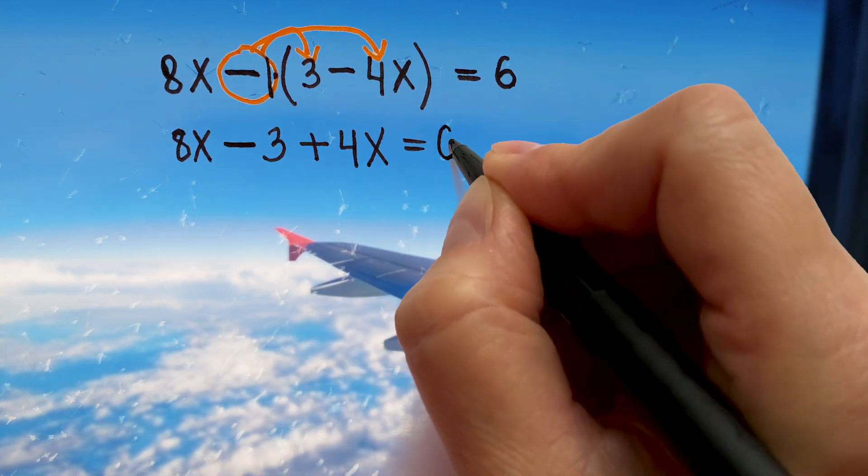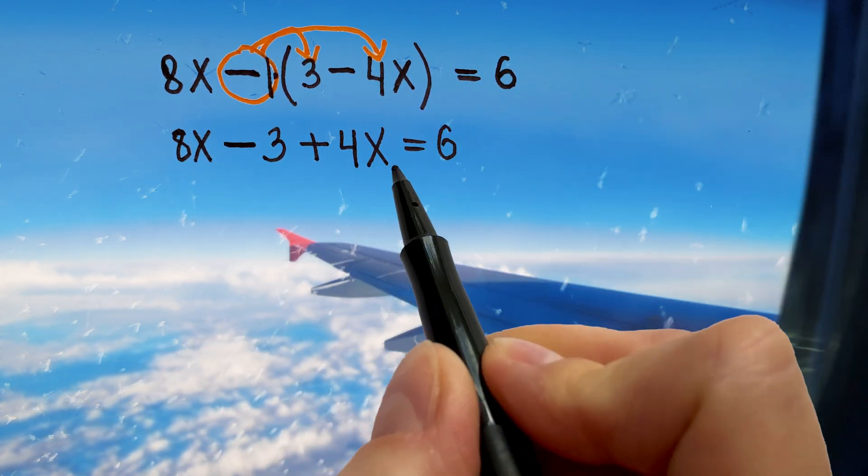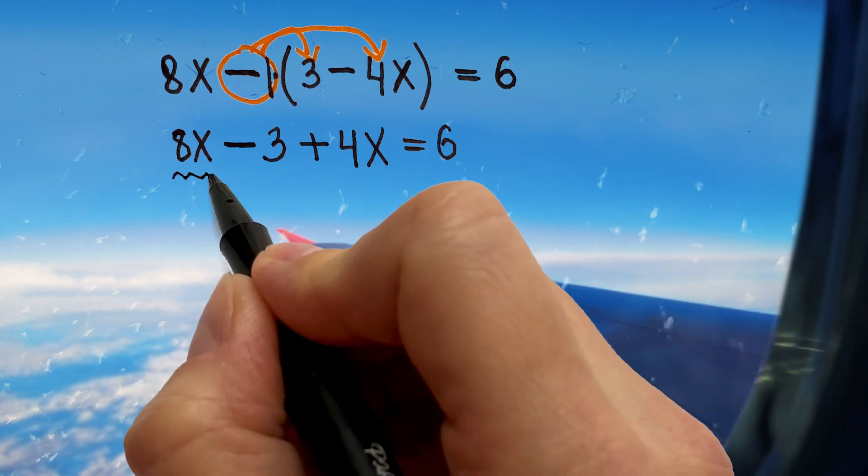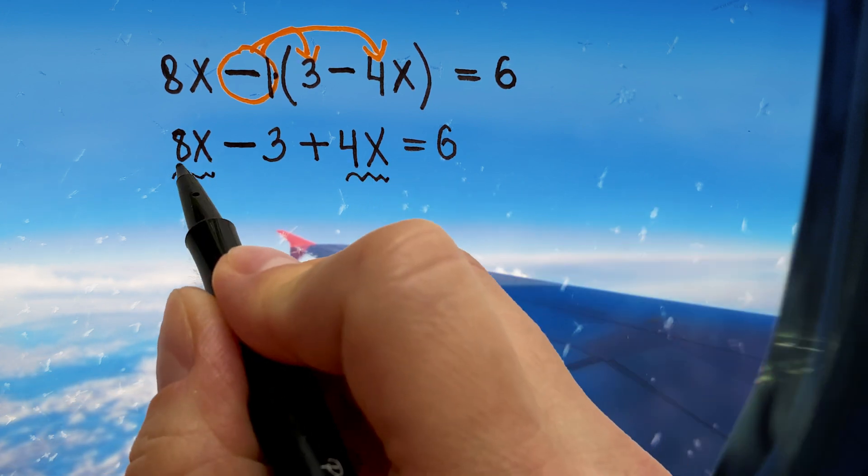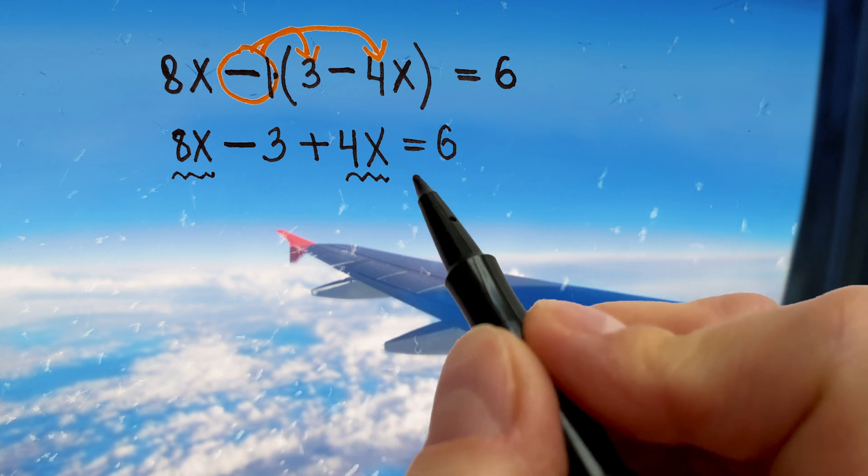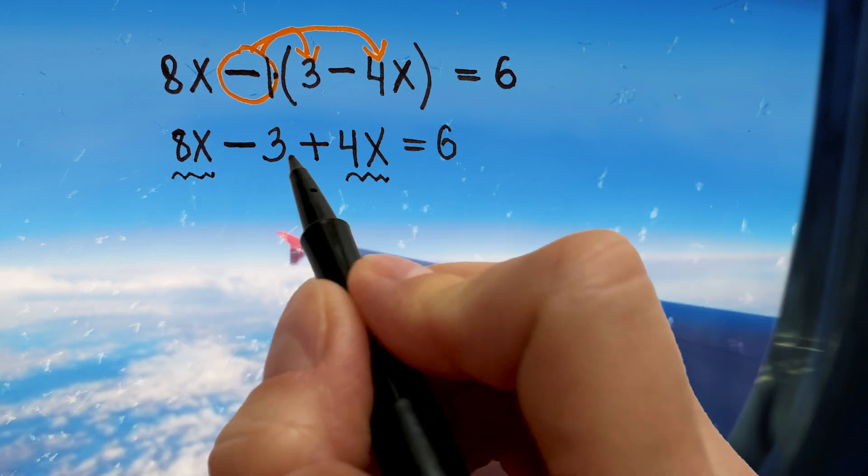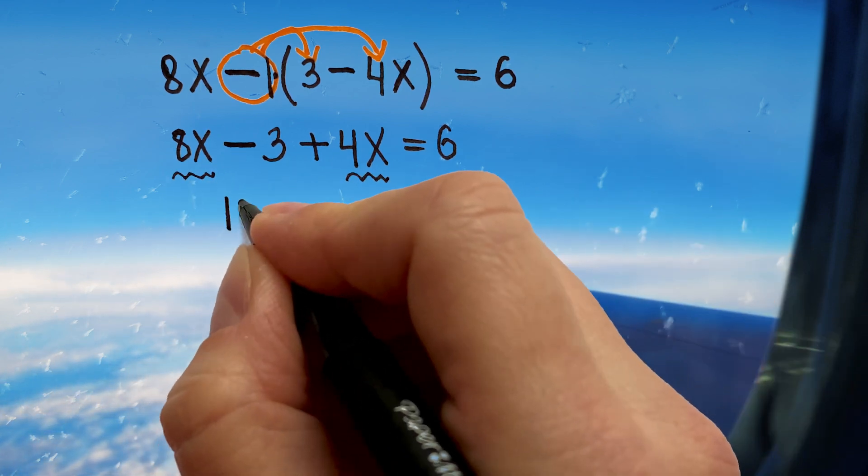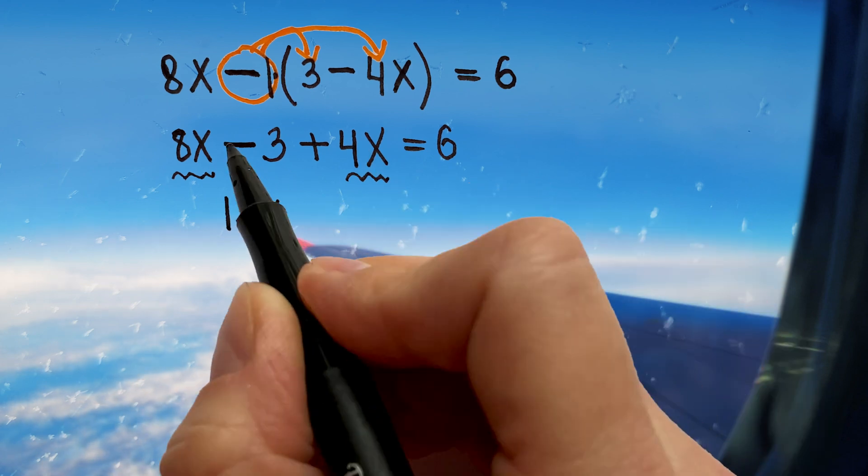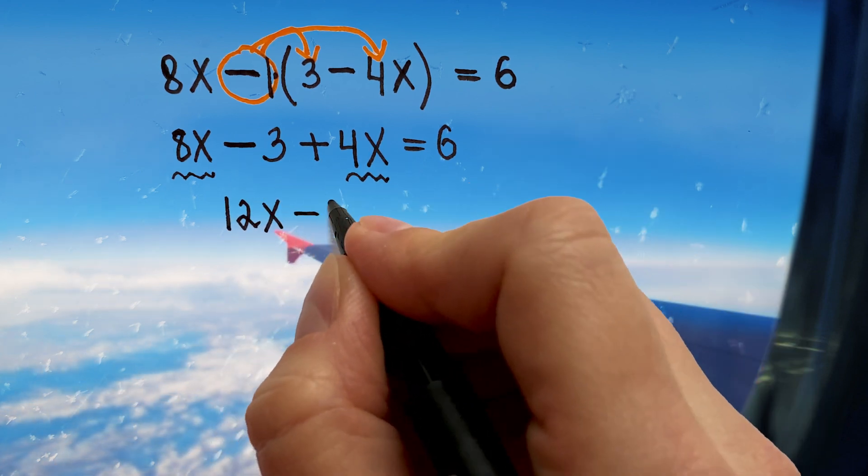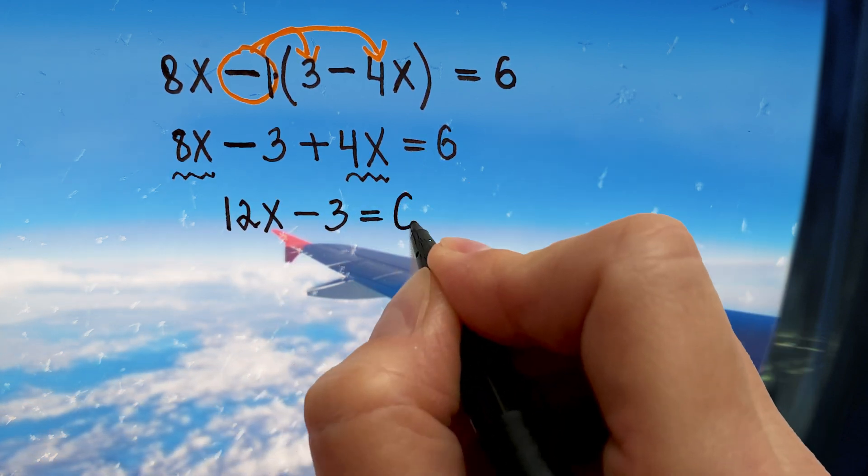On the right we will have 6. Now let's look for like terms. We can add our x's together because 8x and 4x are like terms. So 8x plus 4x will give us 12x. Let's bring down negative 3 and on the right we will have 6.